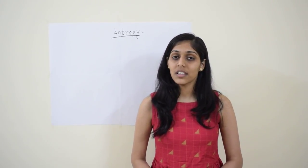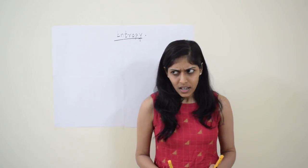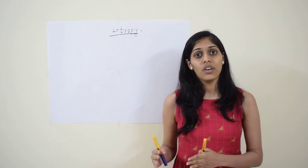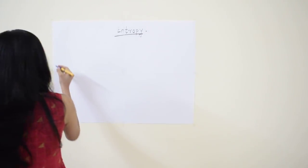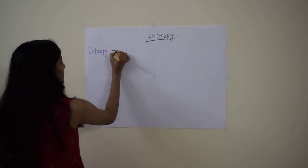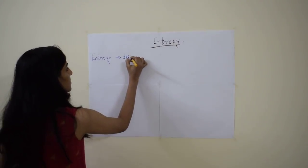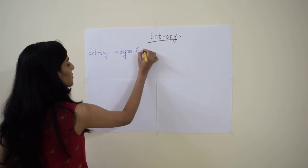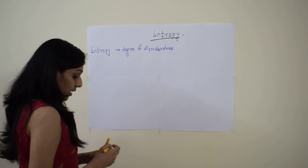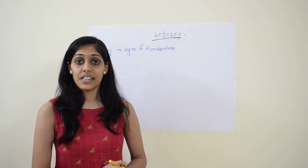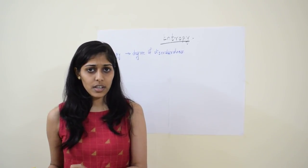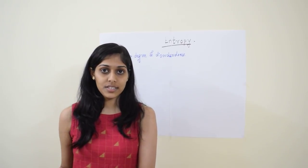Today we will be discussing a topic in thermodynamics called entropy. By definition it is quite simple — it is the degree of disorderness. It changes when a phase gets changed. For a solid, which is a well-organized structure, the entropy is very less because it is already an ordered system.